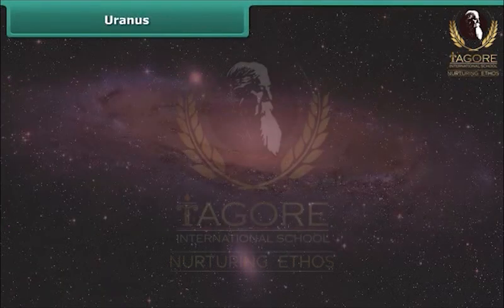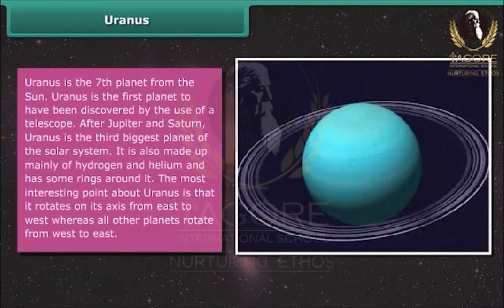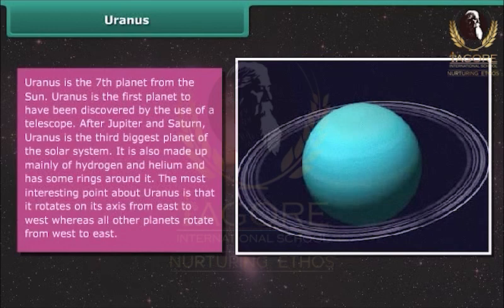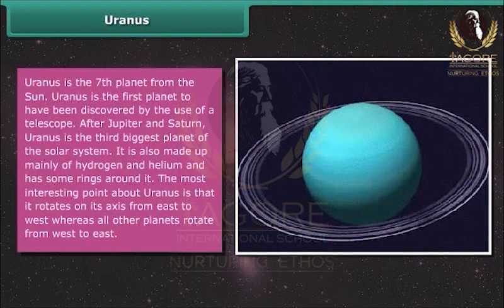Uranus is the seventh planet from the Sun and the first planet to have been discovered by the use of a telescope. After Jupiter and Saturn, Uranus is the third biggest planet of the solar system. Uranus is also made up mainly of hydrogen and helium and has some rings around it. The most interesting point about Uranus is that it rotates on its axis from east to west, whereas all other planets rotate from west to east.